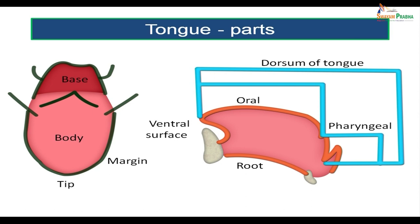Now let us see the parts of the tongue. If you see this particular picture, this is the dorsal surface and this is the ventral surface of the tongue. The dorsal surface is divided into two parts. The front part, in the oral cavity, is the oral part of the tongue. The part of the tongue which goes towards the pharynx is the pharyngeal part. The tongue has two surfaces: an oral surface and a ventral surface.